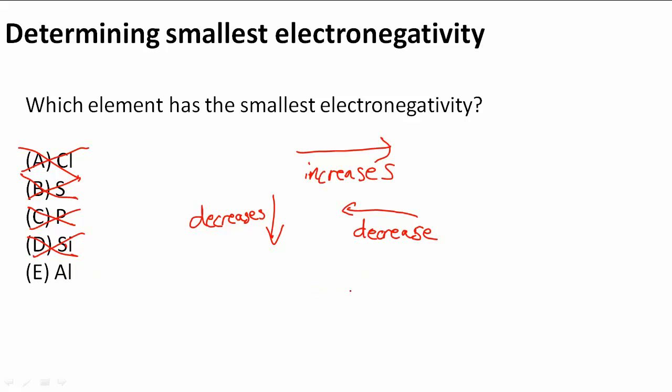You could have seen that they were all in the same period. When we go from right to left, it decreases, so the one furthest to the left, which is Al as opposed to Cl, is actually the smallest. E is the answer to that problem.